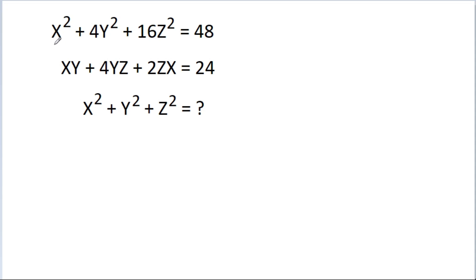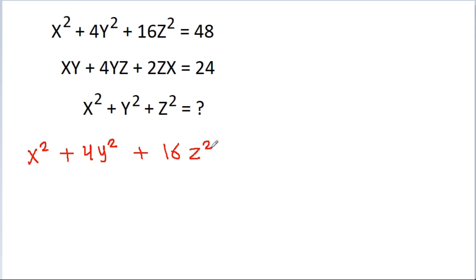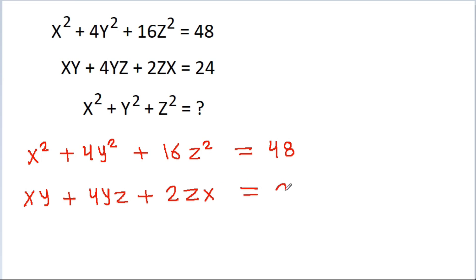In this video, we have been given that x² − 4y² − 16g² = 48 and xy − 4yg − 2gx = 24. We have to find the value of x² − y² − g².